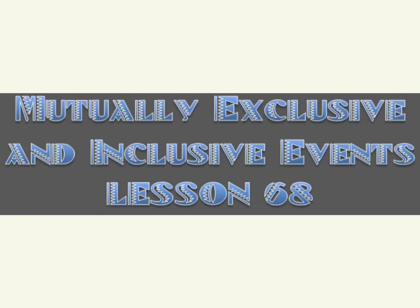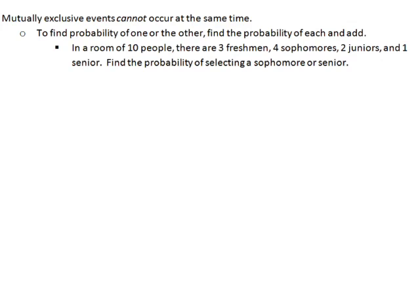Mutually exclusive and inclusive events. Mutually exclusive events cannot occur at the same time, so to find the probability of one or the other, we find the probability of each and then add. An example of mutually exclusive would be: